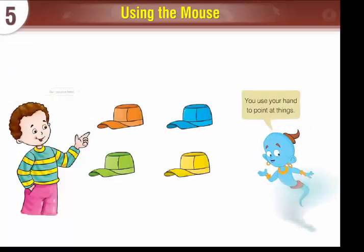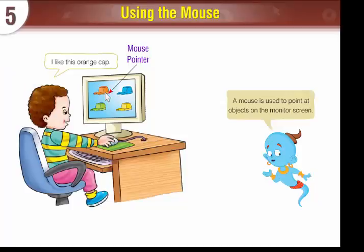Chapter 5: Using the Mouse. Working with a Mouse. You use your hand to point at things. A mouse is used to point at objects on the monitor screen.